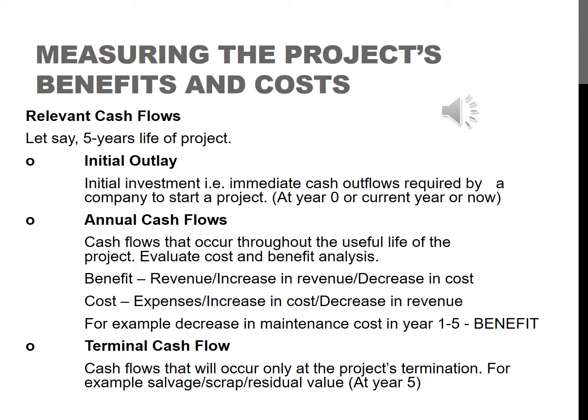Next is how to measure a project's benefits and costs. Relevant cash flows are divided into three phases. The first is initial outlay — the initial investment or cash outflows required by a company to start a project, identified at year zero. The second phase is annual cash flows, which occur throughout the useful life of the project. We need to evaluate a cost and benefit analysis: a benefit is an increase in revenue or a decrease in cost, while a cost is an increase in expenses or a decrease in revenue.